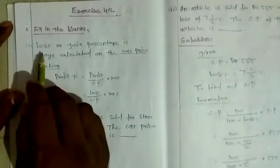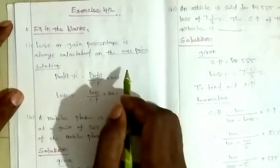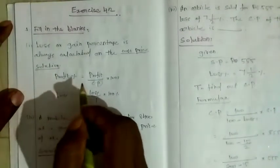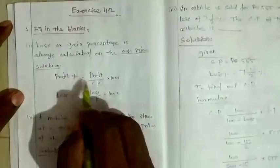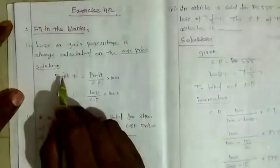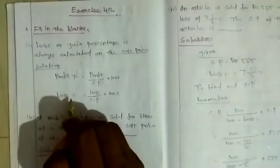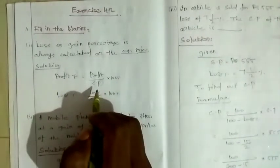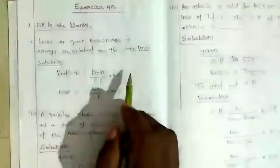Exercise 4.2, fill in the blanks. Question 1: Loss or gain percentage is always calculated on the cost price. So profit percentage = (Profit divided by CP) into 100%, and loss percentage = (Loss divided by CP) into 100%. The base is always the cost price.